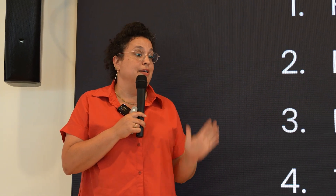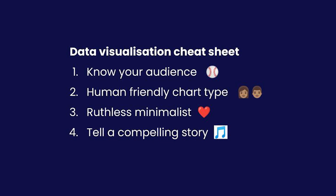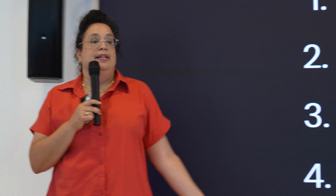To conclude, I've told you four tips. One: know your audience — only throw the ball you know they can catch. Two: be friendly with your chart type — don't make people think about women becoming men. Three: be a minimalist — take away anything not related to the data. Four: tell a compelling story that your audience wants to hear and can relate to. Thank you.